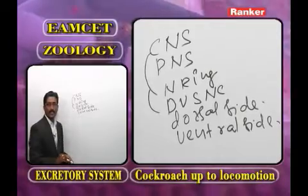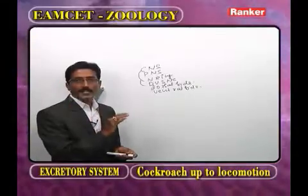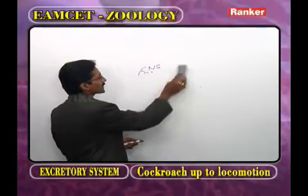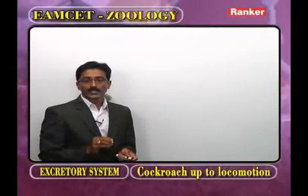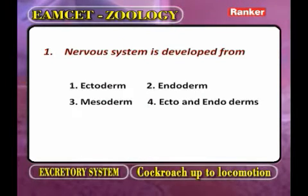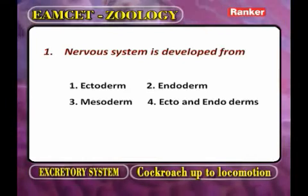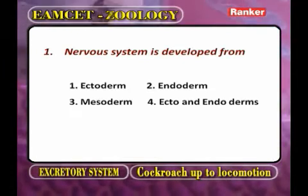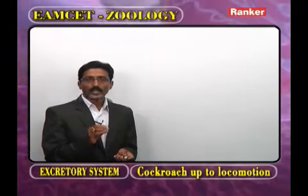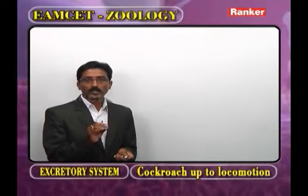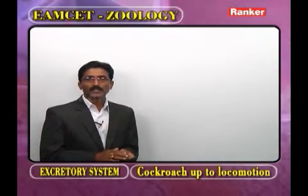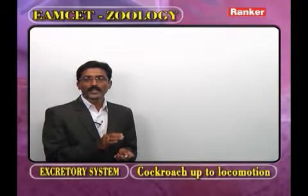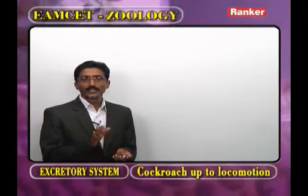Now we discuss some important points regarding the nervous system. An important question: the nervous system is developed from which germ layer? The options are: ectoderm, endoderm, mesoderm, or ecto-endoderm. In all animals, the nervous system is derived from the ectoderm.